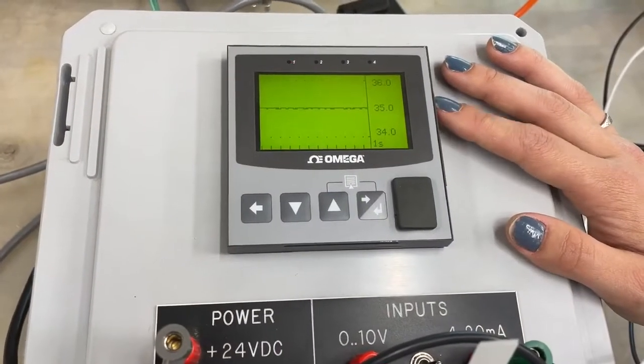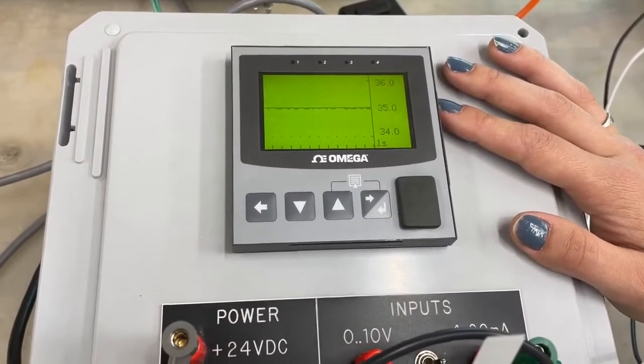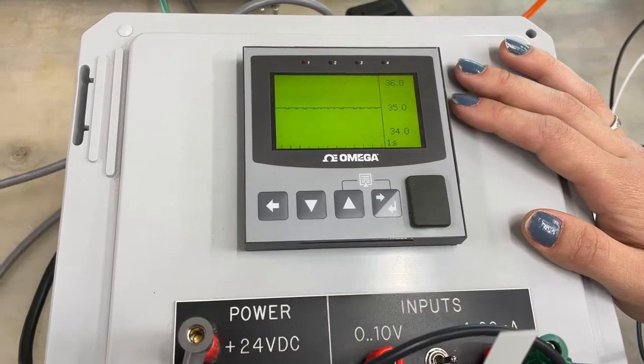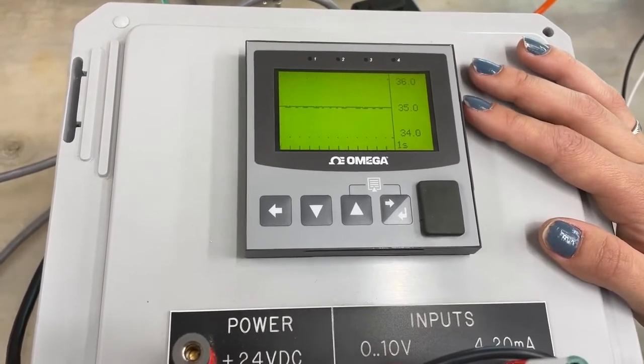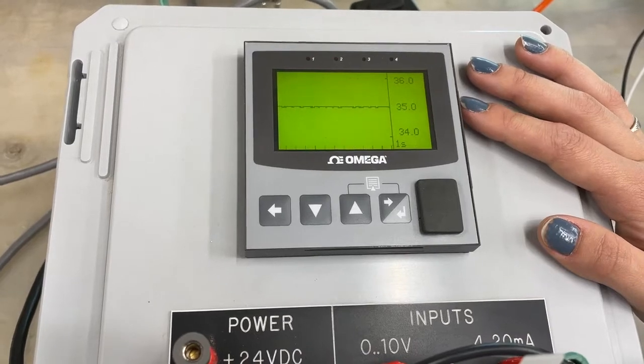Here is the display of the Omega PLC we are using. It is graphing both the flow and the set point. The scale is from 0 to 100% which correlates to 0 to 1000 grams per minute of water through the system.